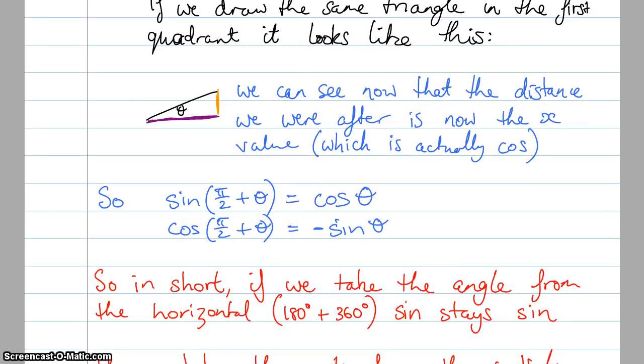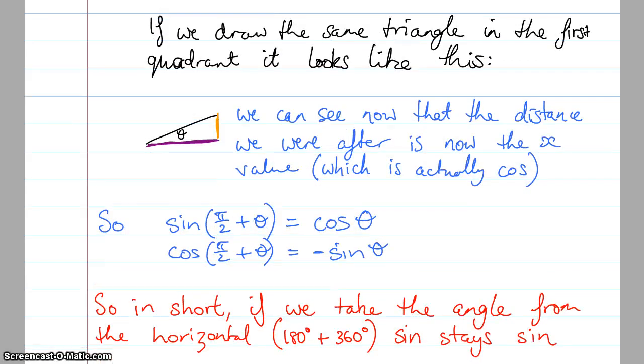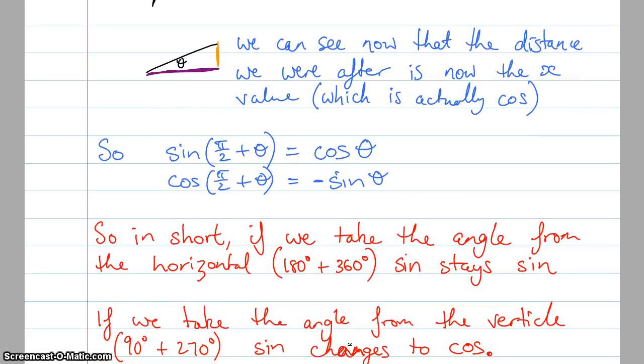So in short, if we take the angle from the horizontal, which is what you've been doing in year 10 and year 11, sine stays as sine. But if we take the angle from the vertical, 90 or 270, then sine changes to cos and cos changes to sine. So just to give you an example of that, I might even open up a new document just to give you an idea of what I'm trying to say.